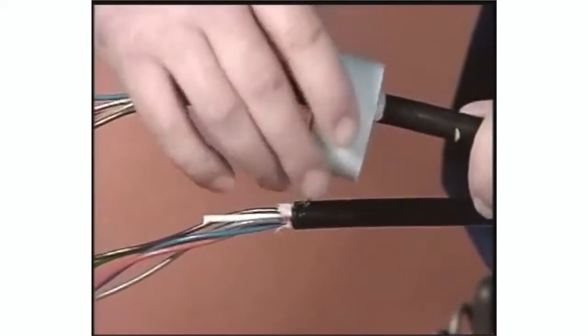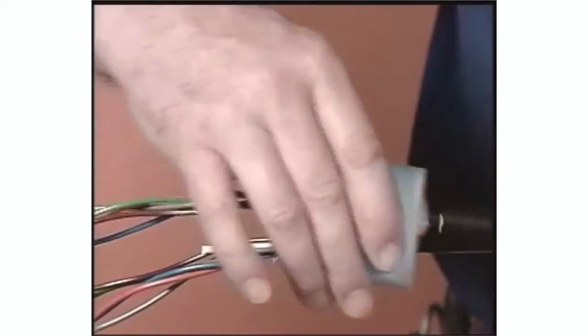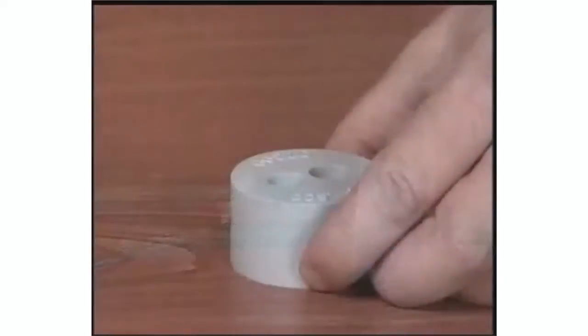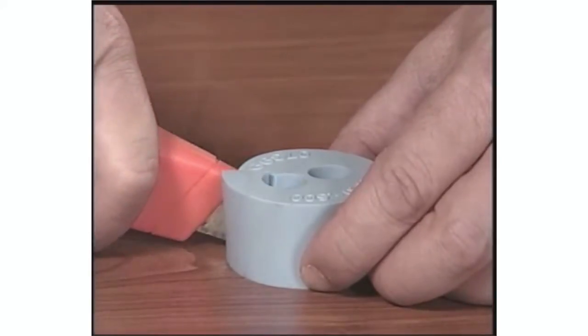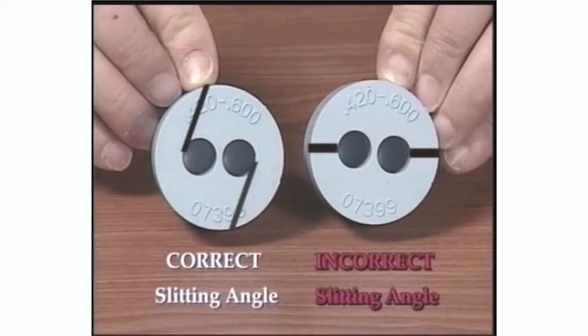For express applications, grommets can be slit in the field by following the grommet application procedure. If your application requires express or balloon cables, lay the grommet on a stable flat surface. Then use a utility knife to cut through the grommet. To install on the cable, slit the grommet on an angle so the slit does not enter the hole in the grommet at a 90 degree angle.